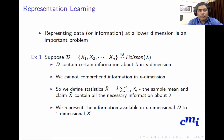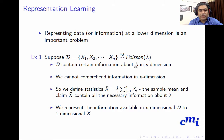Representing data or information at lower dimension is an important problem. Suppose dataset D is x1, x2, ..., xn — n random variables, iid, from a Poisson distribution with parameter lambda. D contains certain information about lambda in n dimensions because the dataset has n samples, so the information is in n dimensions.